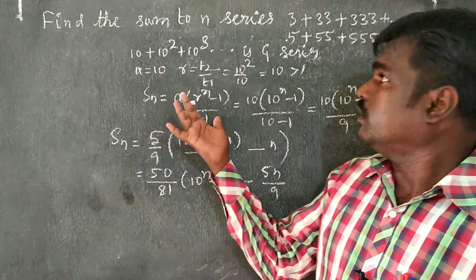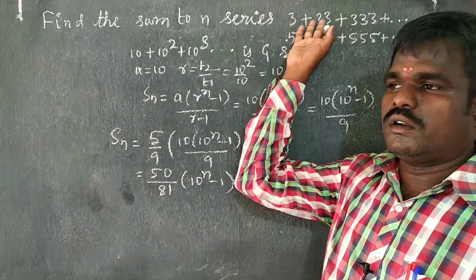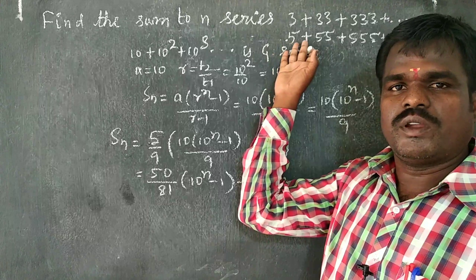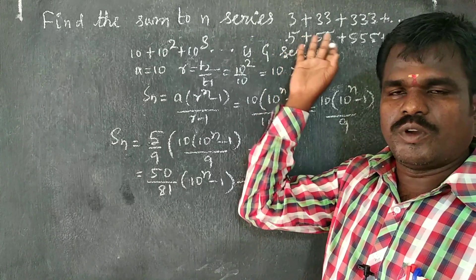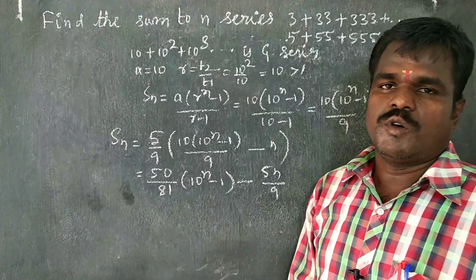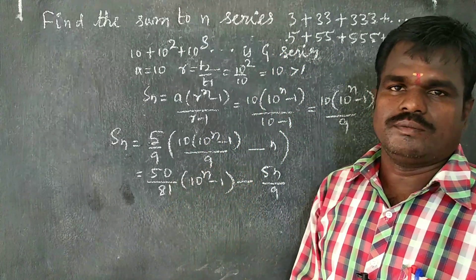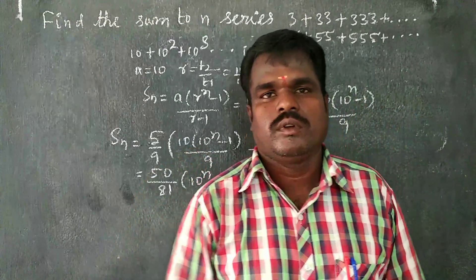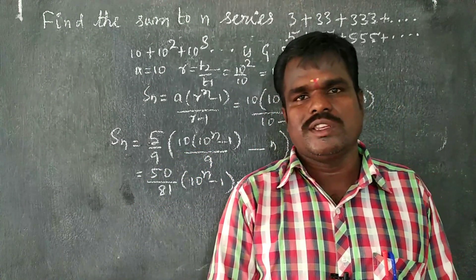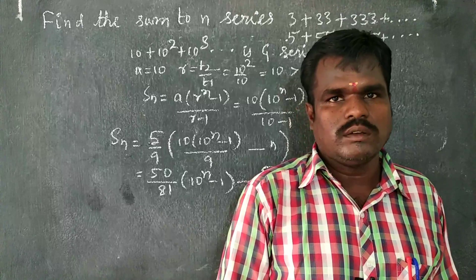So the sums of 3 plus 33 plus 333 and 5 plus 55 plus 555 are now found. This is how we solve these types of series problems. Okay friends, see you in the next class for the next topic.